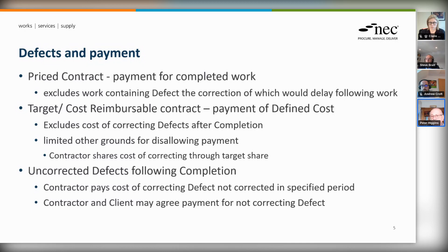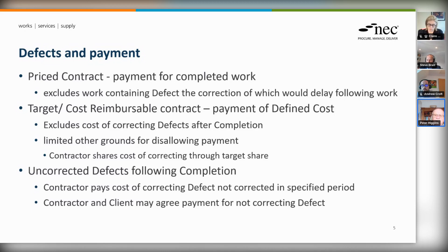There is a provision for correcting defects after completion where they're not corrected: the contractor must pay the cost of correction if it's not done within the defects correction period, which is normally a fairly short period. The contractor would pay the client for the cost the client incurs in correcting the defect itself — which could be substantially more than what it would cost the contractor to do the same thing. It's always possible for the contractor and client to agree to leave a defect in the work and agree a payment for it.